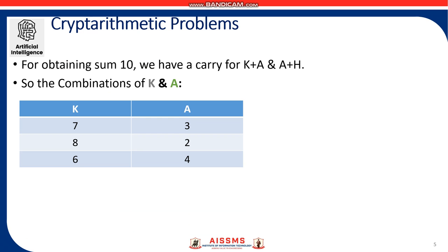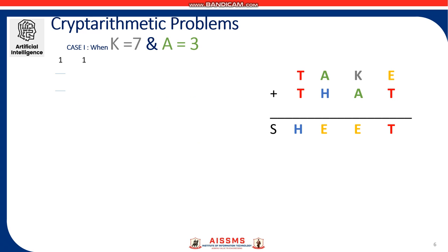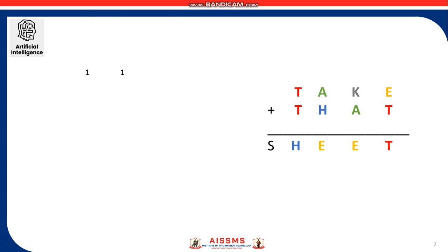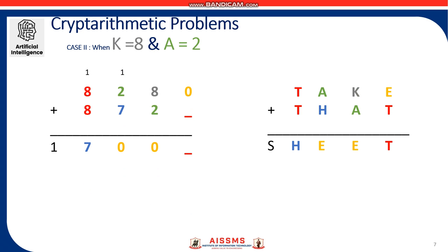So checking out these combinations of K and A to find values of H and T, we see that if K equal to 7 and A equal to 3, then for H to be 6, we see that the constraint is not satisfied as non-integer is not allowed, so this case is rejected. Now case 2, when we have K equal to 8 and A equal to 2, then for H to be 7, we see that the rule that each alphabet must have a unique number is not satisfied as T cannot be 8 to get a sum of 17, which is by the addition of 8 plus 8 plus 1, which is a carry generated from A plus H, and that K has been already allotted for the numeral 8, so this case 2 is rejected.